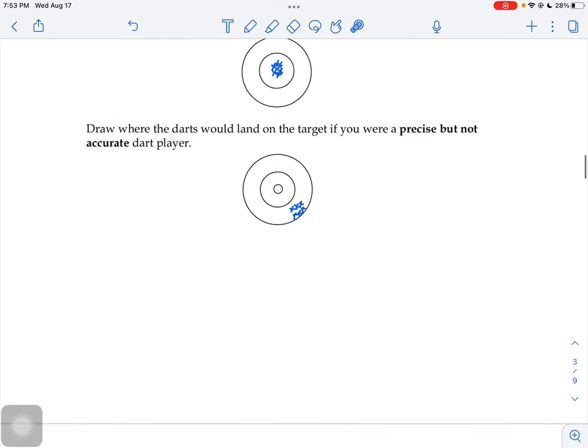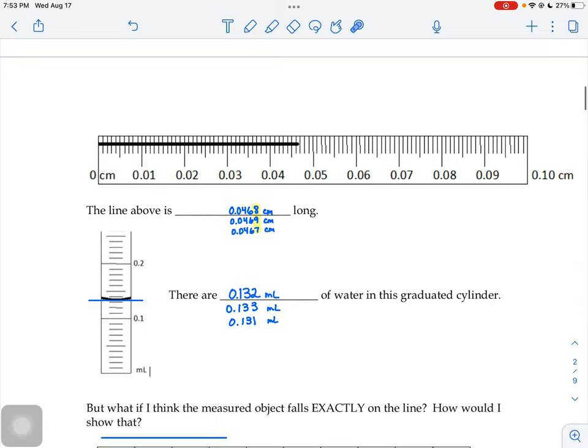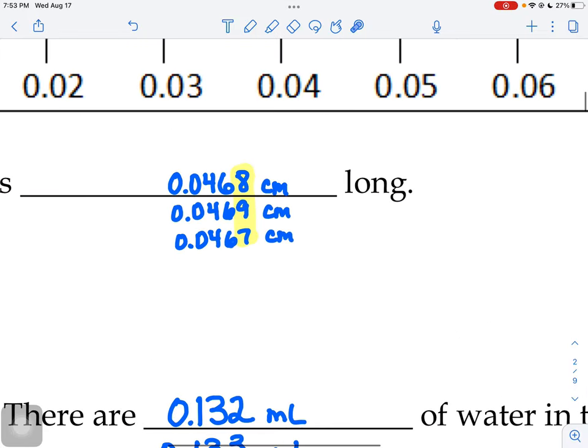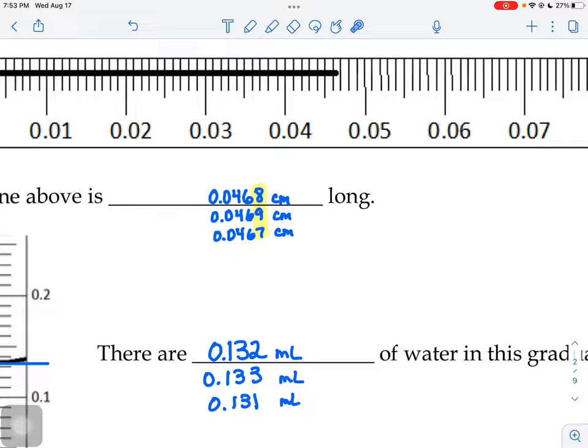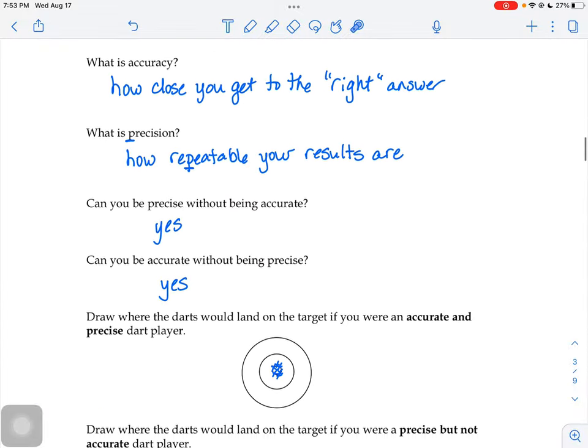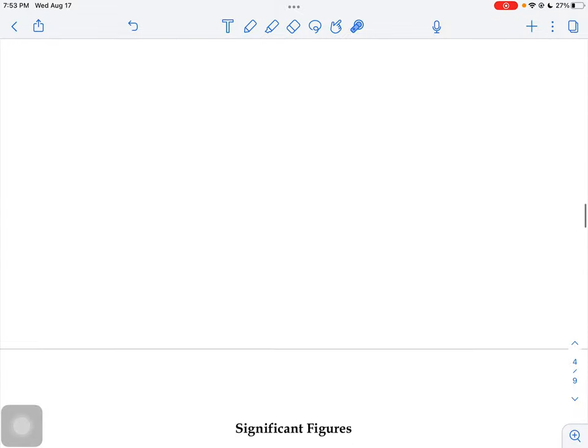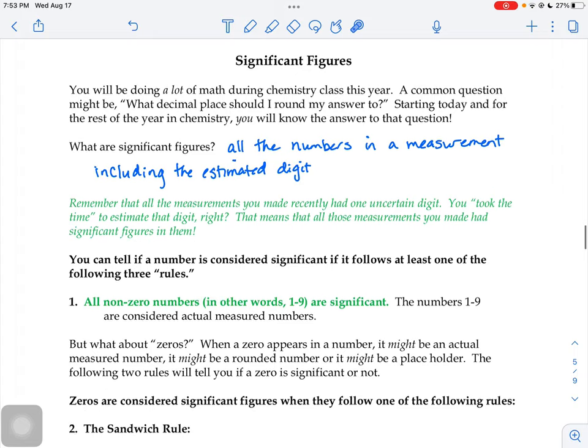If I scroll back and we look at those measurements we were taking just yesterday, it would be kind of weird for us to write 0.0468 or 0.0469 if we didn't think that those were the actual measurements. We're going to make the assumption that if you see a number one through nine, it's significant.